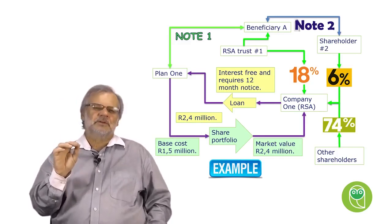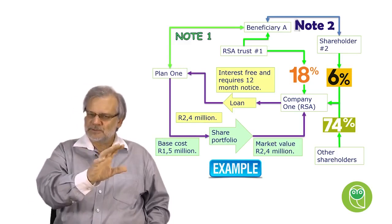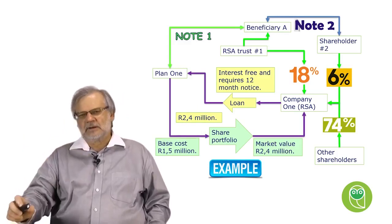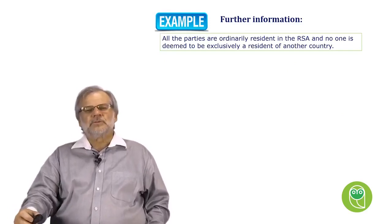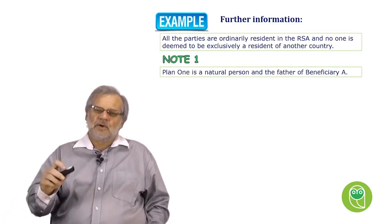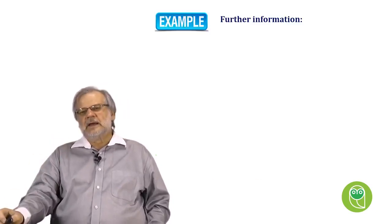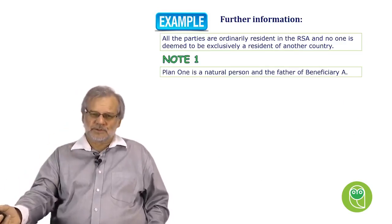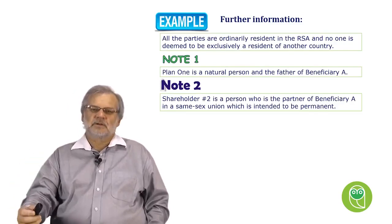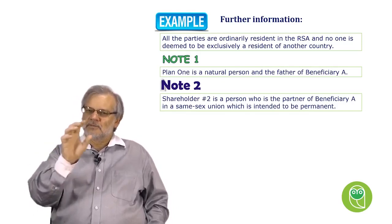People often say this transaction or structure is not caught by Section 7C — that 7C does not apply to it. We've got the natural person, call him Plan 1, and we've got a South African resident trust with a beneficiary. Plan 1 is a natural person and the father of Beneficiary A, who is one of the beneficiaries of the trust, a relative in the first degree of consanguinity. Shareholder 2 is a partner of Beneficiary A in a same-sex union intended to be permanent — so Shareholder 2 is not a family member of the planner.